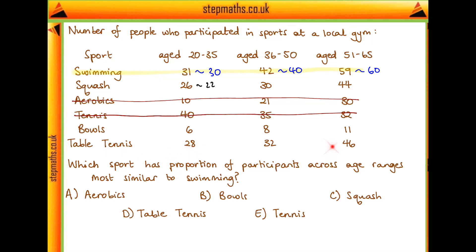For table tennis, half of 46 is 23, so again the youngest age range has a few too many participants. And three quarters of 32 is 24. So if we wanted table tennis to have the same ratios as swimming, we'd want the lowest age range to be about 23 or 24, but what we have is a little bit too high — similar to squash.